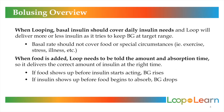Let's begin with an overview on bolusing. When looping, basal insulin should cover daily insulin needs, and Loop will deliver more or less insulin as it attempts to keep blood sugars at normal target range. The basal rate should not cover food or various other special circumstances. If you were to fast, your basal rate should keep you steady within your target range. When food is then added into Loop, Loop needs to be told the amount of food you have eaten and the absorption time of that food. If the food shows up before insulin starts working, blood glucose levels will rise. If the insulin shows up before the food starts to absorb, blood glucose levels will drop.